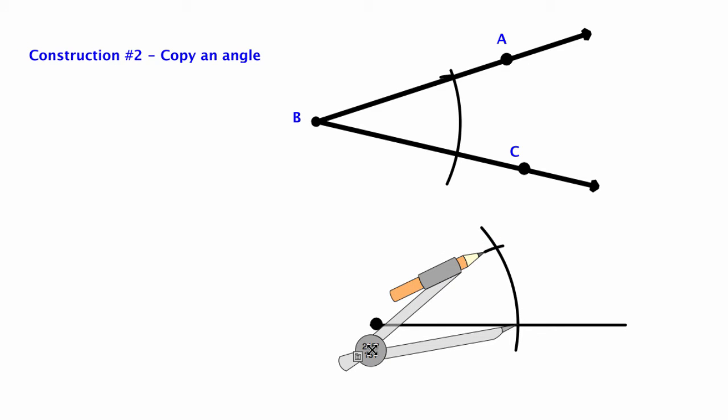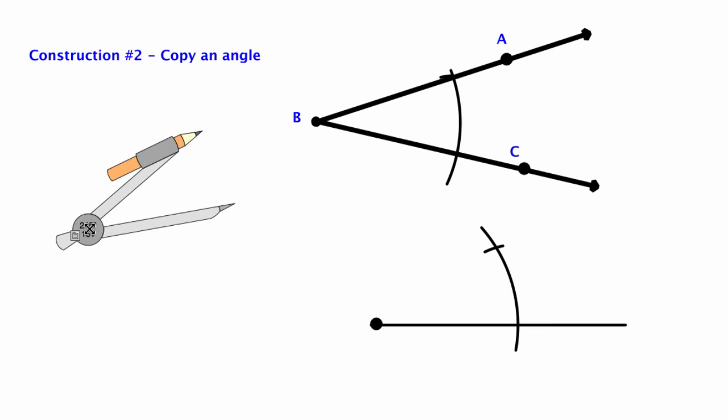So take your straight edge and line it up with the vertex and through that X and that is what the next ray should be drawing.